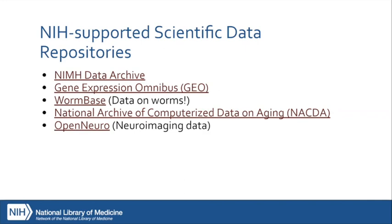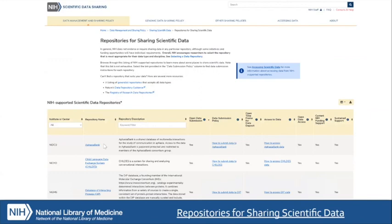As we heard earlier when Lisa was talking about the NIH Biomedical Informatics Coordinating Committee, BMICH has put together a list of repositories that are NIH-supported or NIH-affiliated. Here are just a few examples: the Gene Expression Omnibus (GEO) for genomics data, WormBase for worm data, and OpenNeuro for neuroimaging data. I'm going to open this list and do a quick demonstration to highlight a couple of its features.